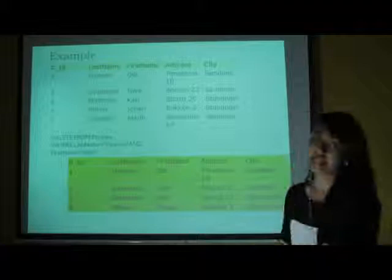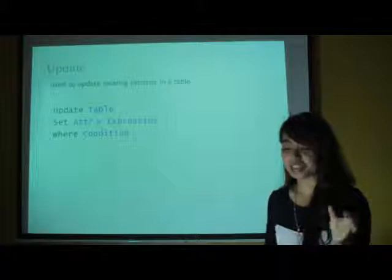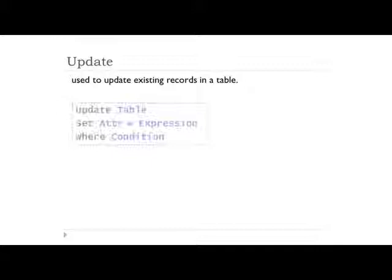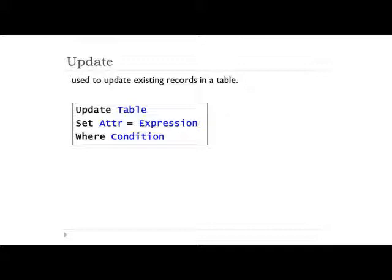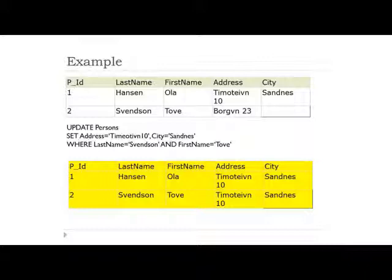The next function is update. This is used to update or modify existing values in the table. You have a syntax update from which table and then you set the attribute and the expression and set the condition that you have identified as well. For example, I have here in the table, you want to modify the last name of Vensod and first name of Tog. And then you want to change it to the syntax that you identified. This will yield the result upon running this code.